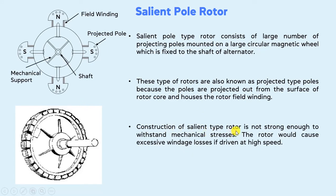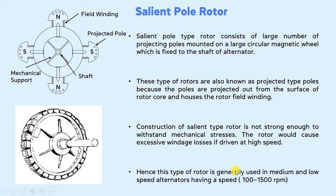The construction of salient pole type rotor is not strong enough to withstand mechanical stresses. If a salient type rotor runs at a higher speed, the outer poles — also known as projected type poles — experience a high centripetal force, due to which the poles of the rotor tend to fly apart. This would result in excessive windage noise. For that reason, this type of rotor is only used in medium and low speed alternators having a speed of 100 to 1500 RPM, since it cannot be run at a higher speed.